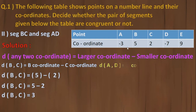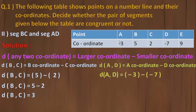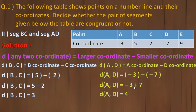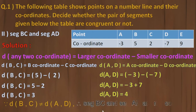Now check for AD. A's coordinate is minus 3 and D's coordinate is minus 7. In negatives, minus 3 is larger, so A is larger. A coordinate minus D coordinate: minus 3 minus (minus 7) — double minus becomes plus — so minus 3 plus 7, meaning 7 minus 3 equals 4. One answer is 3 and the other is 4 — not equal. Therefore BC is not equal to AD, so segment BC and segment AD are not congruent.